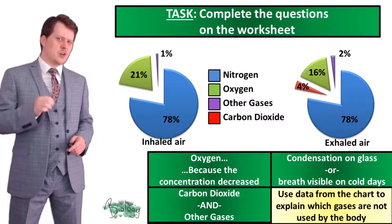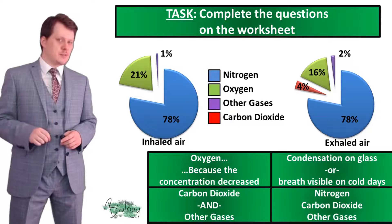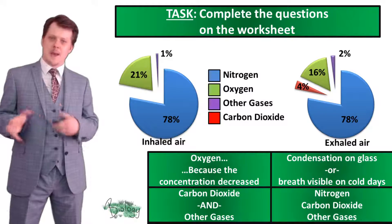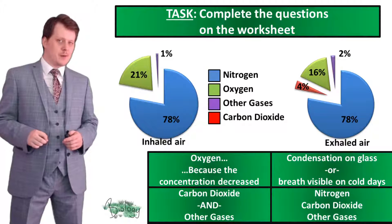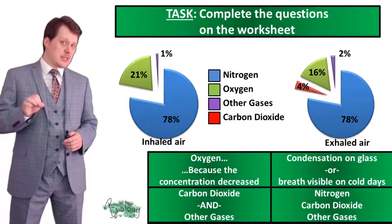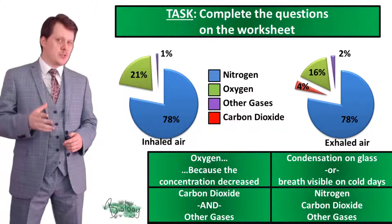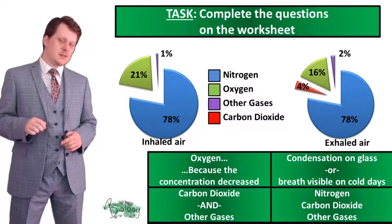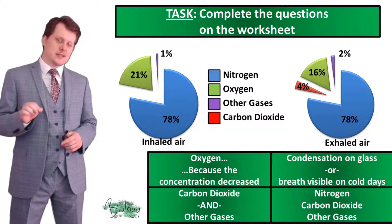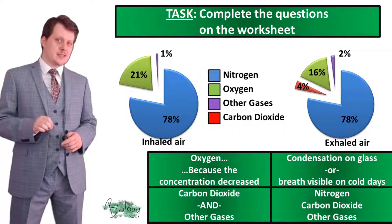Using the data from the chart to explain which gases are not used by the body: nitrogen hasn't been used because it went in at 78% and it makes up 78% of what we breathe out. Carbon dioxide wasn't used by the body — although there's been a change from 0.04% to 4%, it has increased, not decreased. The body produced it as a waste product. Other gases similarly increased from 1% to 2% — the body produced more as a waste product, not used them.